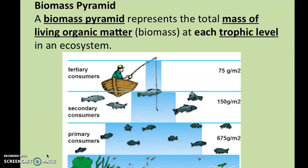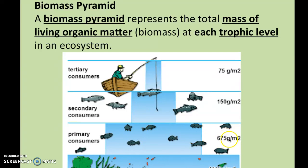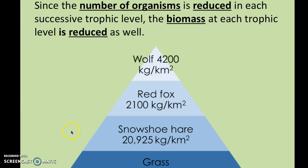The last one is a biomass pyramid. Bio means life, so a biomass pyramid represents the total mass of living organic matter — or recently living organic matter — at each trophic level in the ecosystem. In this biomass pyramid, the producers at the bottom are approximately 2,880 grams per meter squared. Primary consumers — the fish — are 675 grams per meter squared. The number gets smaller and smaller as you go up. The number of organisms is reduced, and the biomass available also reduces with each successive trophic level.